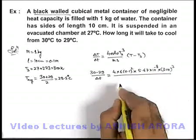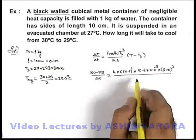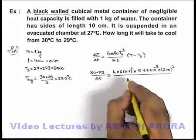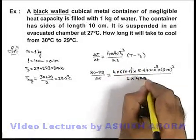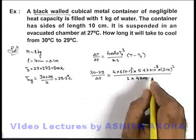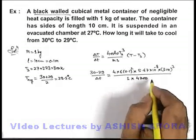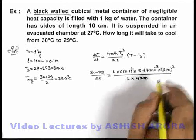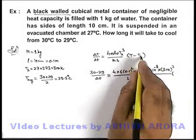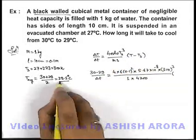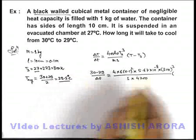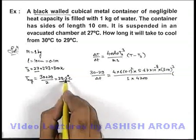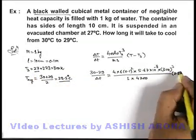Divided by ms: the mass of water is 1 kilogram, multiplied by the specific heat of water, which we can directly use as 4200 joules per degree centigrade per kilogram. Multiplied by T minus Ts: the average temperature is 29.5 and the surrounding temperature is 27 degrees centigrade, so we write 29.5 minus 27, which is 2.5.